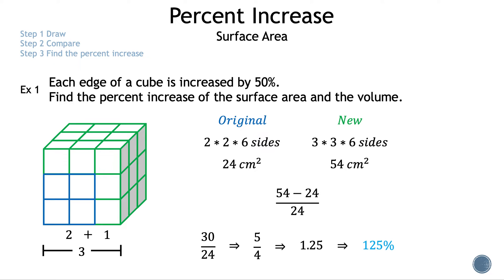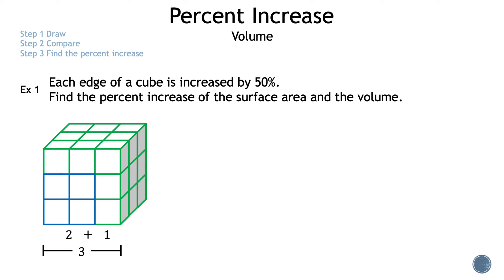Now we need to find the percent increase of the volume when each edge is increased by 50%. The volume of the original cube is length × width × height = 2 × 2 × 2 = 8, so the volume of the original cube is 8 cm³. Now we find the volume of the new cube.